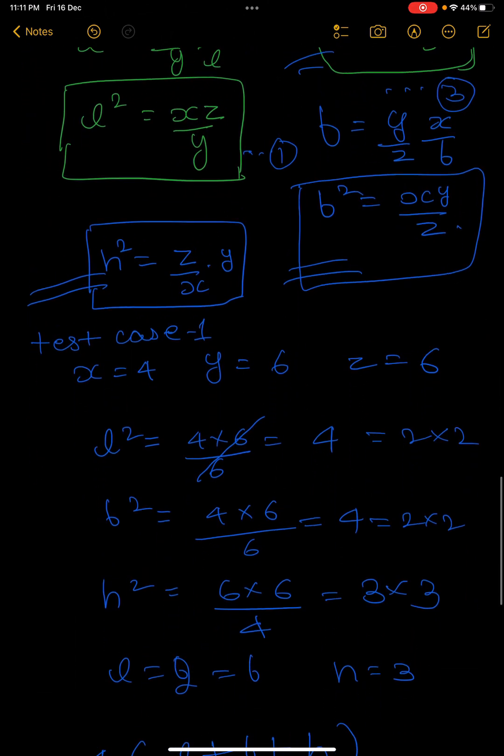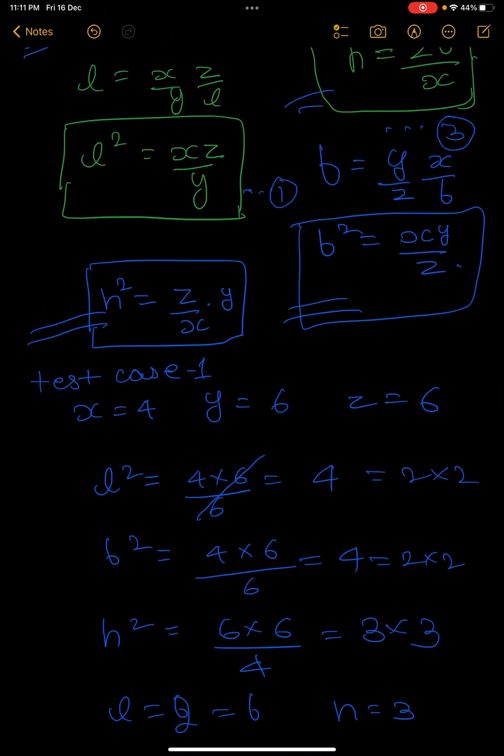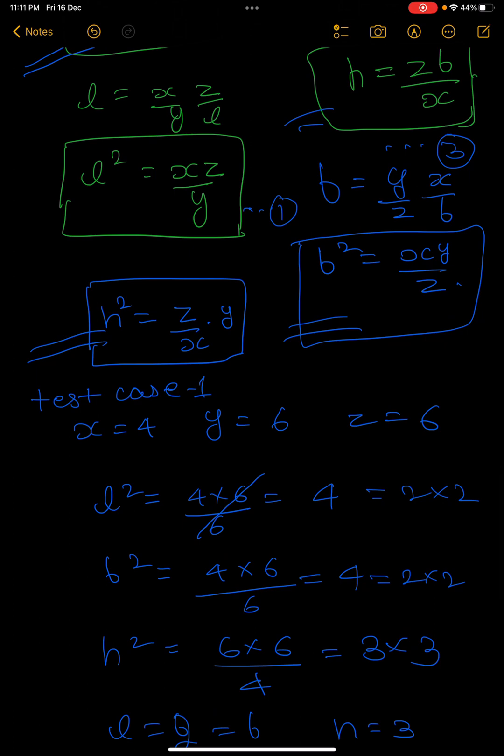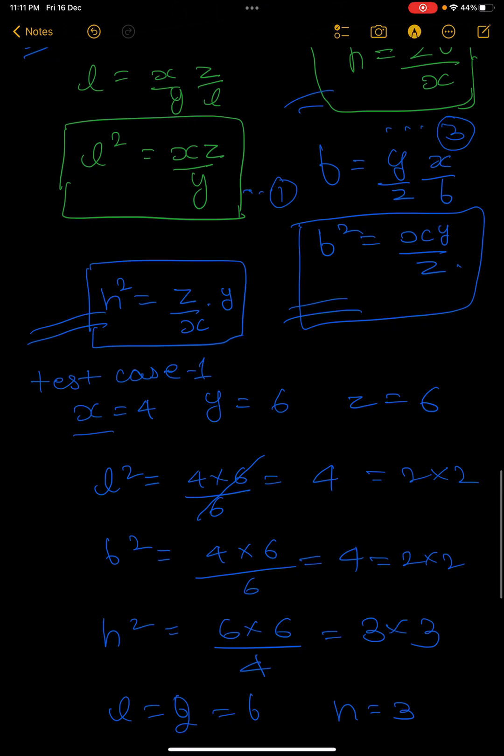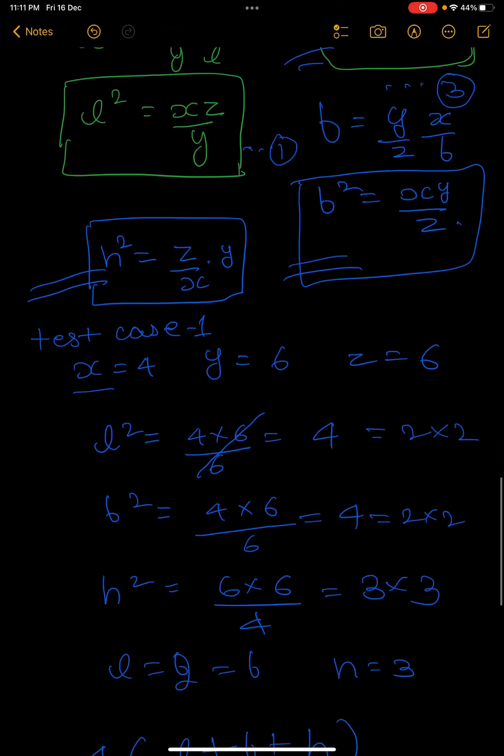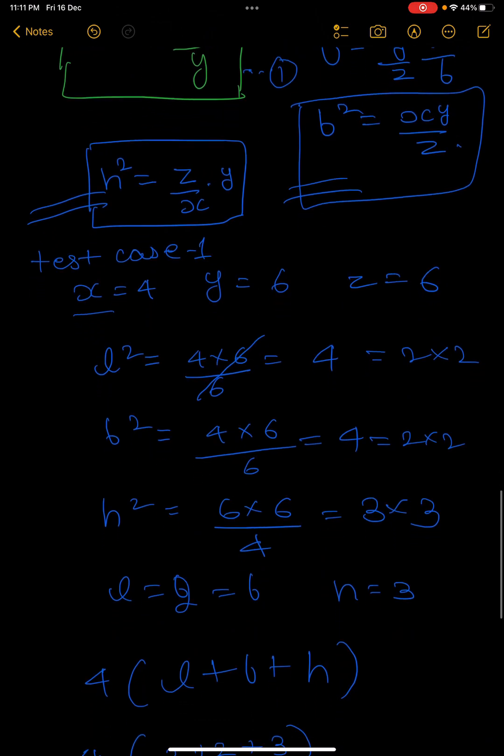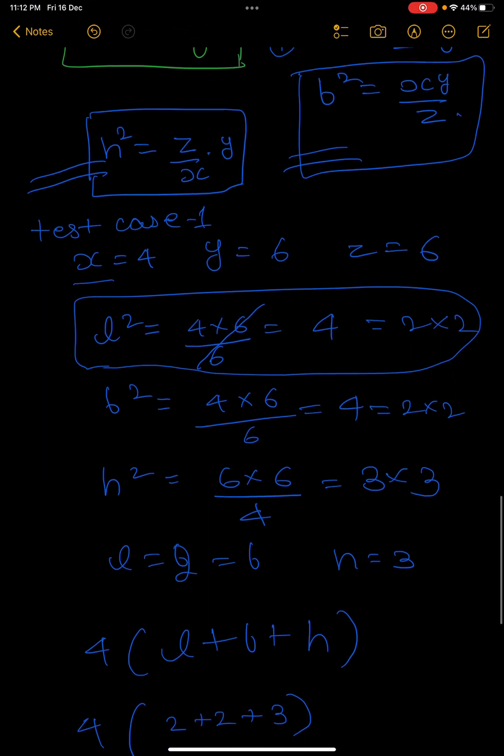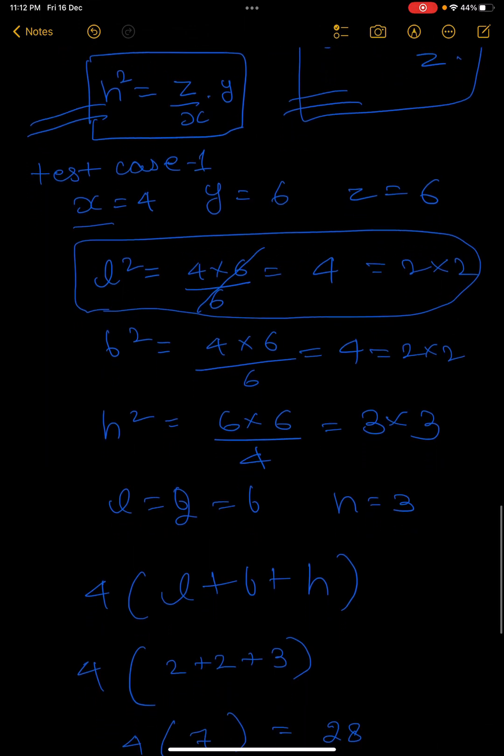So L squared according to the equation is equal to x times z divided by y. Simply, x is 4, z is 6, divided by y which is 6. Calculating this, you will find L squared equals 4, so L equals 2. Similarly for B and H you can easily find out the values.